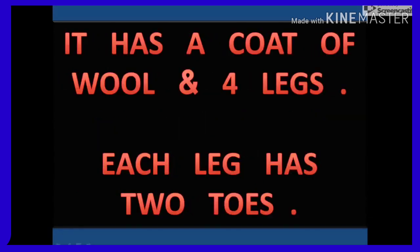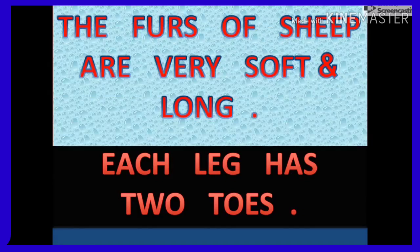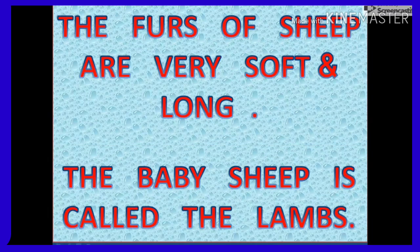It has a coat of wool and four legs. Each leg has two toes. The fur of sheep is very soft and long. The baby sheep is called a lamb.